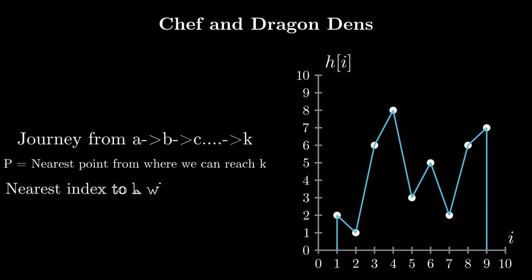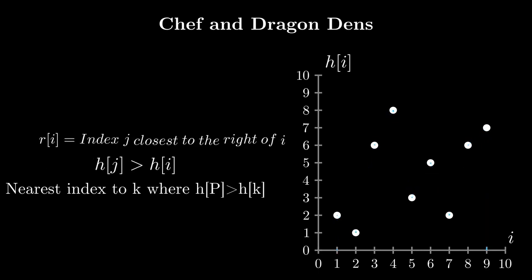Let's try and figure out a strategy for a journey from point a to point k. Let p be the nearest point to k in between points a and k from where we can reach k. The point p is always included in our journey, as there always exists a valid journey to p from all points where a valid journey to k exists. Adding p to these journeys before adding k only increases the value since a[i] > 0 for all i. We define r[i] as this point p for all i, with paths coming from the right — meaning the minimum j such that j > i and h[j] > h[i]. This is a classic problem solvable using a stack.